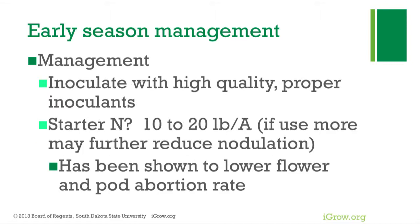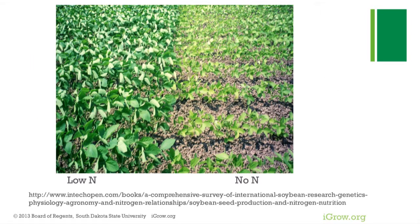Because you have less bacteria activity, inoculate with high-quality, proper inoculants. The question is also whether to put on starter fertilizer. Some papers recommend 10 to 20 pounds per acre — no more than that, because too much will further reduce nodulation. A little bit actually helps the plant and has been shown to lower flower and pod abortion rates later in the season.